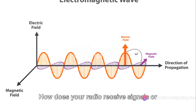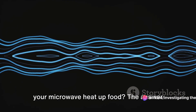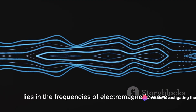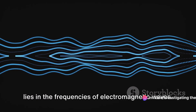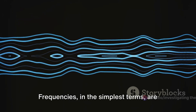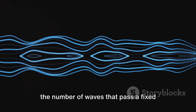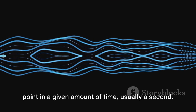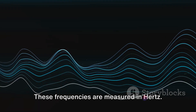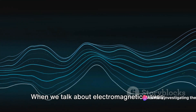How does your radio receive signals, or your microwave heat up food? The answer lies in the frequencies of electromagnetic waves. Frequencies, in the simplest terms, are the number of waves that pass a fixed point in a given amount of time, usually a second. These frequencies are measured in hertz.